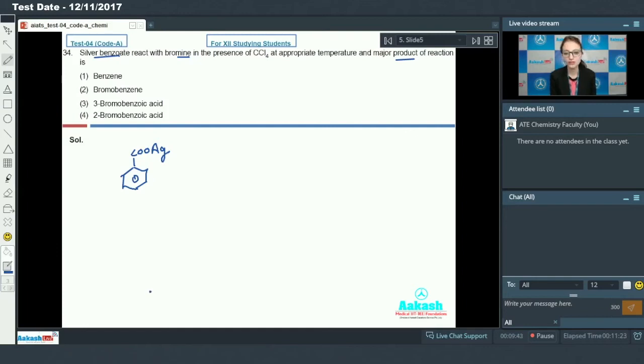Silver salt of benzoic acid when reacts with bromine in presence of CCl4 forms bromobenzene, carbon dioxide and AgBr. The major product formed is bromobenzene. This is Hunsdiecker reaction. So the answer for this question is option two.